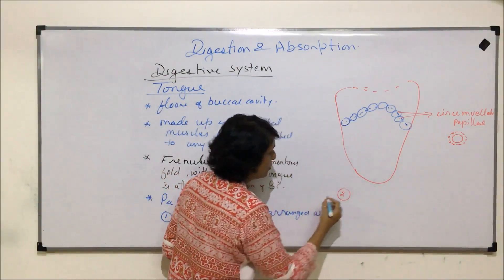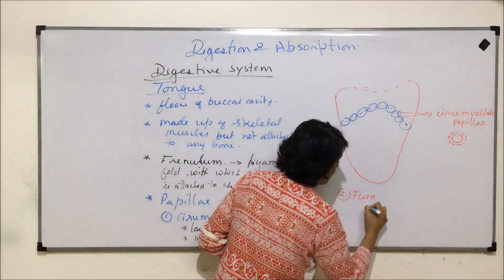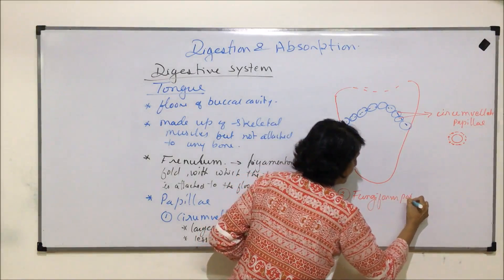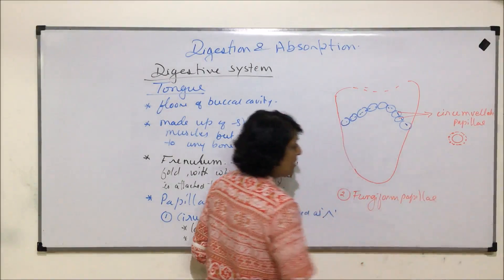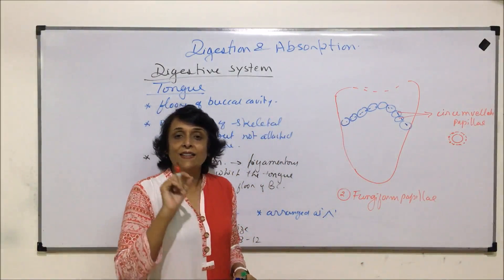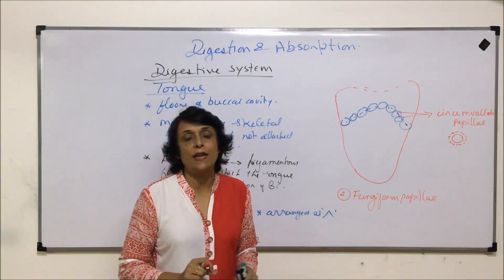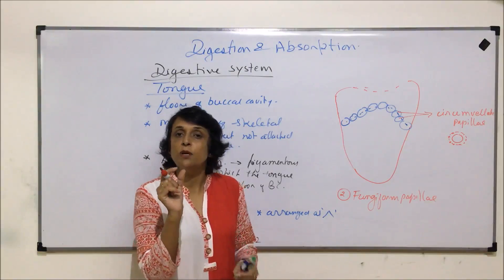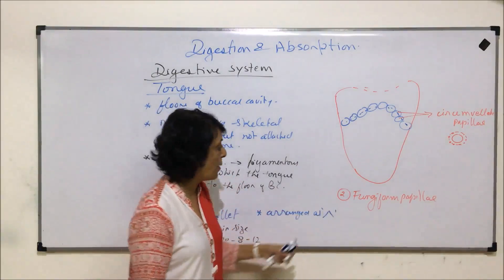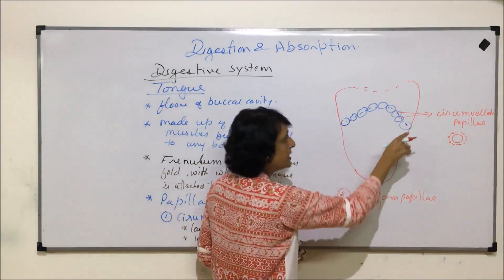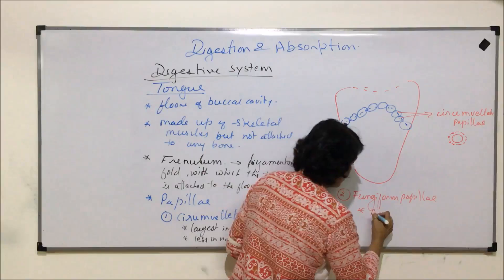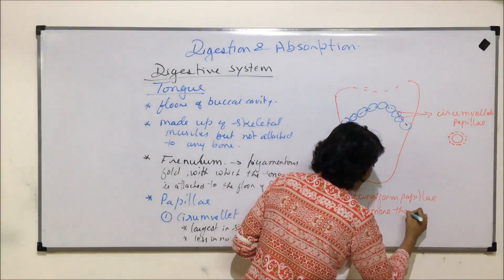The second type of papillae is known as fungiform papillae. They are swollen and the shape slightly looks like a mushroom, which is why they are known as fungiform. Their number is more than circumvallate papillae.